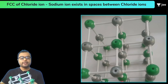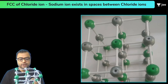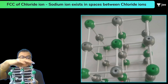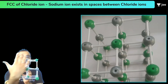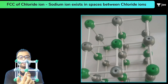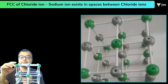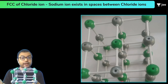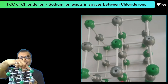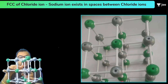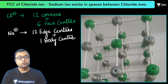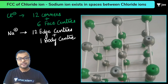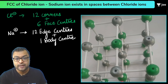In this structure, the chloride ions are at the corners as well as the face centers of the unit cell. You can see here — this is the face of the cube, the cubic unit cell's face. The chloride ion is lying at the corners and face centers. If we look at the sodium ion, it lies at the edge centers of this cube, and Na⁺ also lies at the body center. So overall, Cl⁻ is at 8 corners and 6 face centers; Na⁺ is at 12 edge centers and 1 body center.